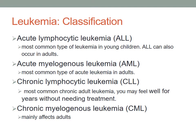Acute myelogenous leukemia, or AML, is a common type of leukemia that occurs both in children and adults. It is the most common type of acute leukemia in adults. It has a sudden and dramatic onset. The patient may have serious infection and abnormal bleeding. AML is characterized by uncontrolled proliferation of myeloblasts in the bone marrow.